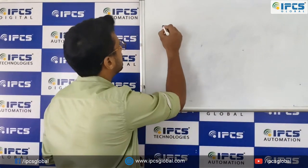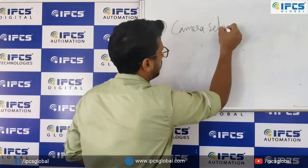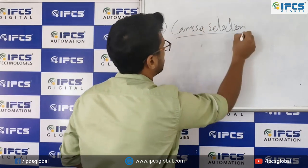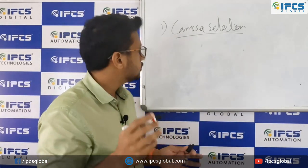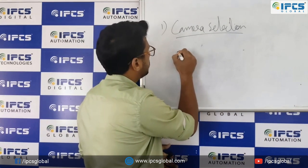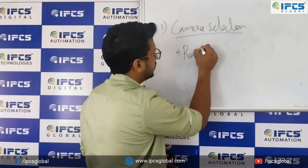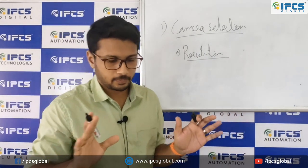The first and most common mistake in CCTV installation is camera selection. Camera selection means choosing the right camera as required by the customer. It's a big topic, so I'll minimize it. The first point is resolution — resolution is nothing but the clarity of the image.